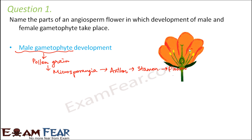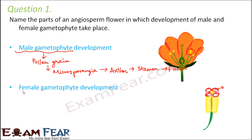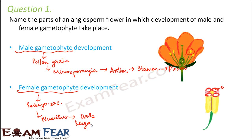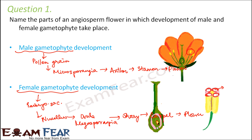Looking at the flower diagram, this is the anther, and inside this anther you have the microsporangia — four pollen sacs. Similarly, the female gametophyte is the embryo sac. The embryo sac is formed inside the nucellus, which is inside the ovule or megasporangia. The ovule is inside the ovary, and the ovary is part of the carpel. Inside the ovary you have the ovule, and inside the ovule you have the embryo sac.